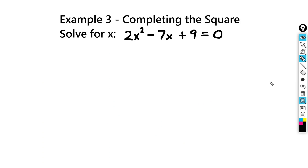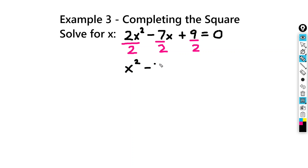In our third example of completing the square, we have the quadratic 2x squared minus 7x plus 9 equals 0. This one, our solution is going to be a little bit more messy, but sometimes that's the way it goes. Our first step is we need to divide every term by the coefficient in front of x squared, so we're going to divide everything by 2. So we'll get x squared minus 7 halves x plus 9 halves.